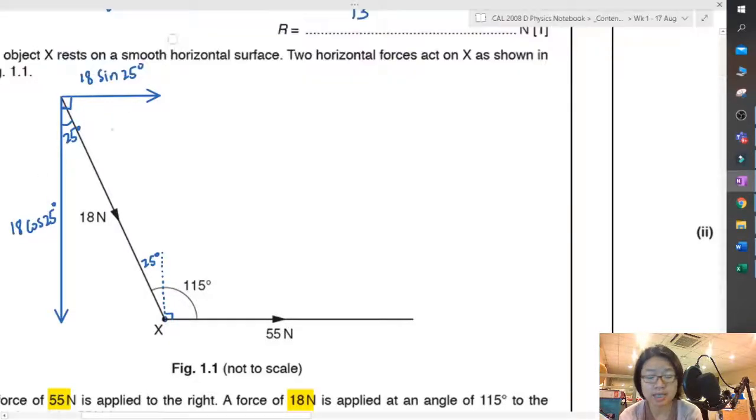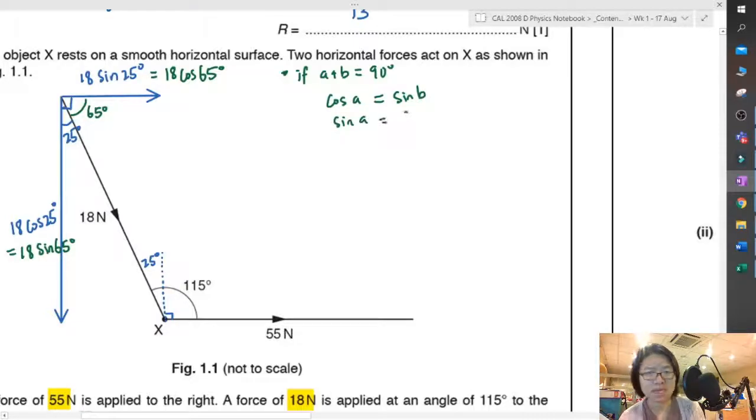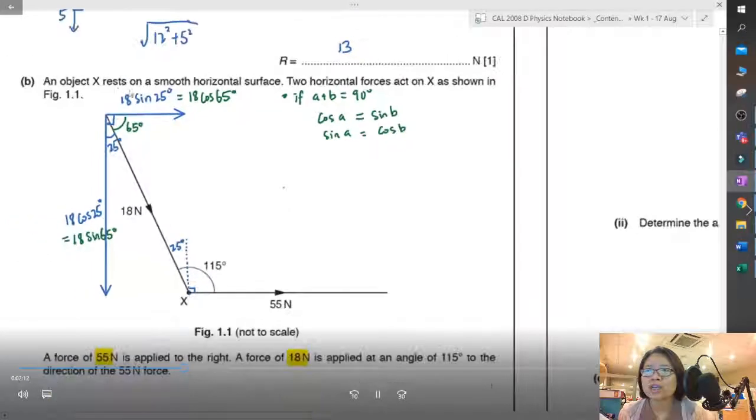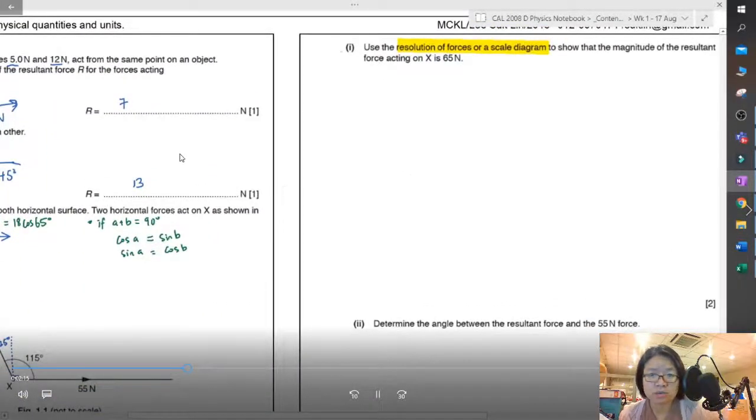Alright. So the component that has no angle will be sine. And the component that is beside the angle will be cos. You might be thinking, Miss, I cannot use this 65. You know, the other angle is 65. Sure, you can use 18 cos 65 for the horizontal one and 18 sin 65 for the vertical one. Because, you know, in maths, if A and B is 90, complementary angle, then cos A will be equal to sine B. And sine A will be equal to cos B. If I teach you maths, I will prove this. But I think you know the proof one. Okay. Think about it. So you can check and press your calculator. 18 sin 25 is equal to 18 cos 65. So right now, I'm going to sum up the horizontal forces and sum up the vertical forces.